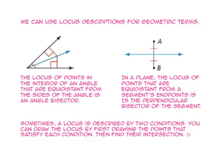We can use locus descriptions for geometric terms. The locus of points in the interior of an angle that are equidistant from the sides of the angle is an angle bisector. In a plane, the locus of points that are equidistant from a segment's endpoints is its perpendicular bisector.